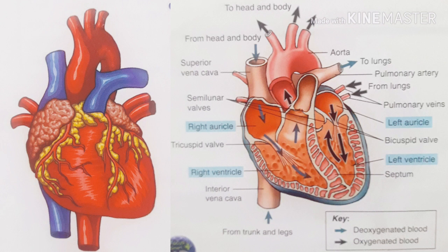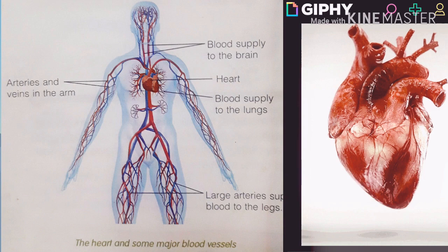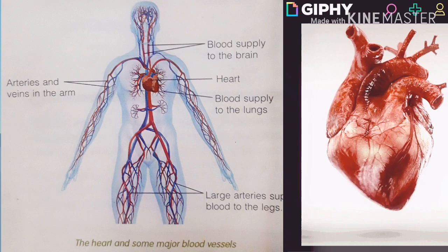The oxygen-poor blood becomes oxygen-rich or oxygenated blood and is brought back to the left atrium by two veins. When the left atrium contracts and causes a heart valve to open, blood enters the left ventricle. When the left ventricle contracts, blood leaves through a large artery and is distributed to all parts of the body. The blood then becomes oxygen-poor or deoxygenated blood and returns to the heart again, and the circulation repeats.